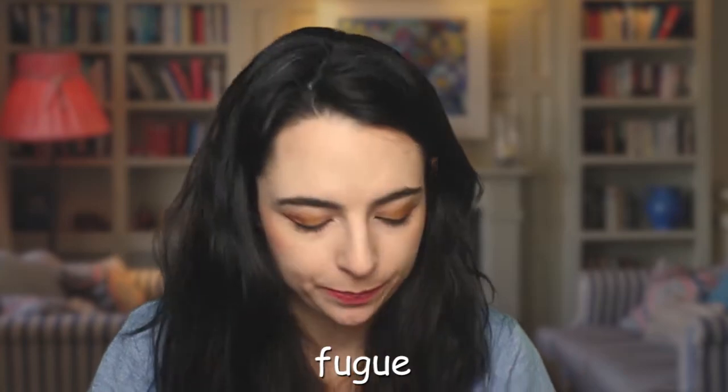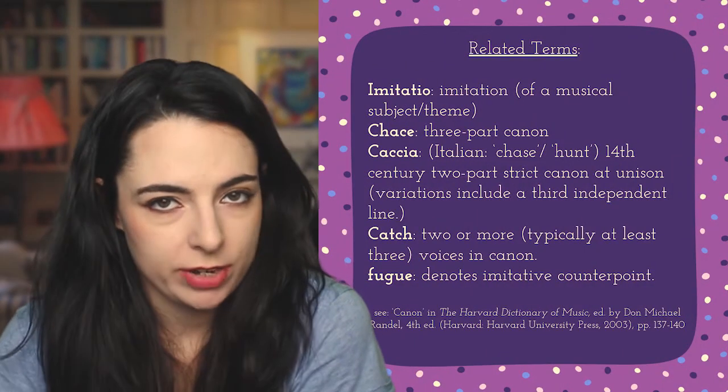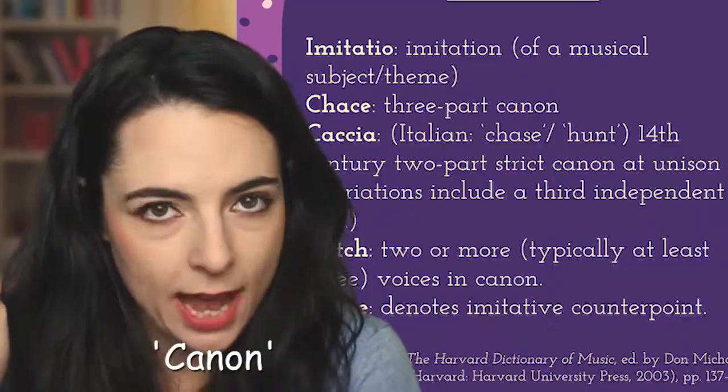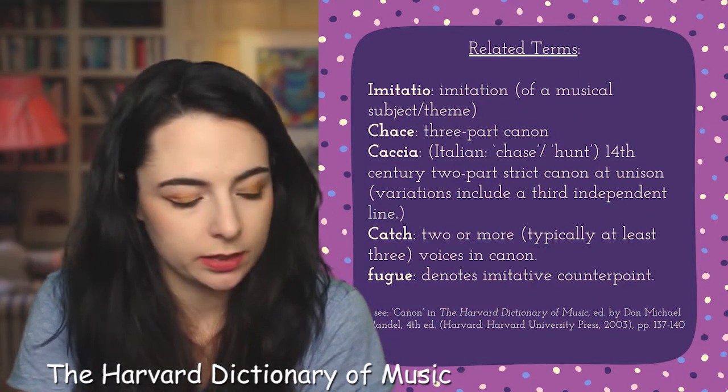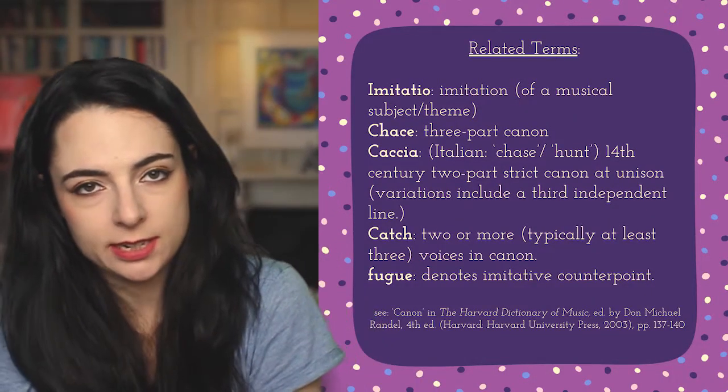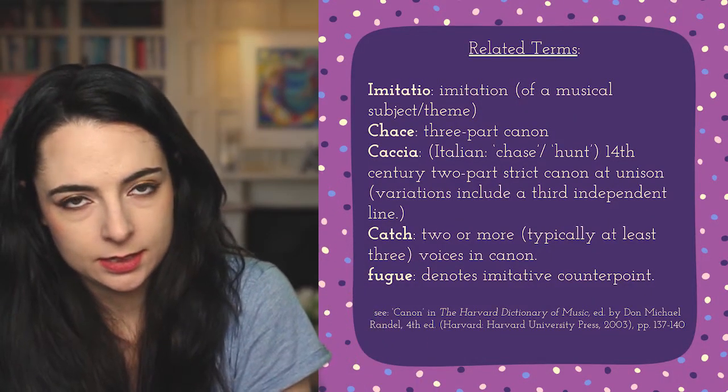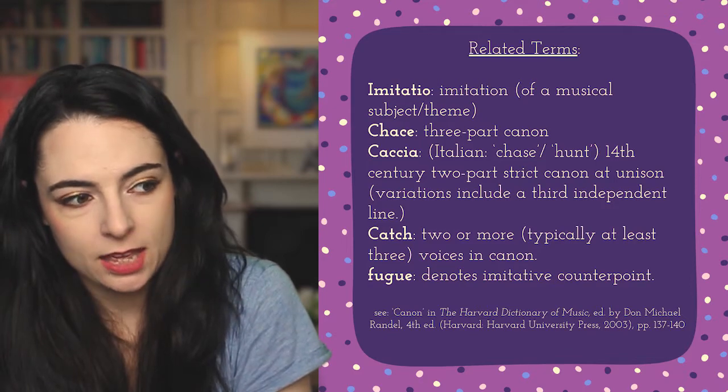Canon necessarily occurs in the stretto of a fugue — that is, if the stretto is a true one. What I mean by that is if each voice entering with the subject continues with it after the next voice enters. There are also a number of related terms for canon. I recommend reading 'Canon' in the Harvard Dictionary of Music. I have some further details on the slide here if that helps.